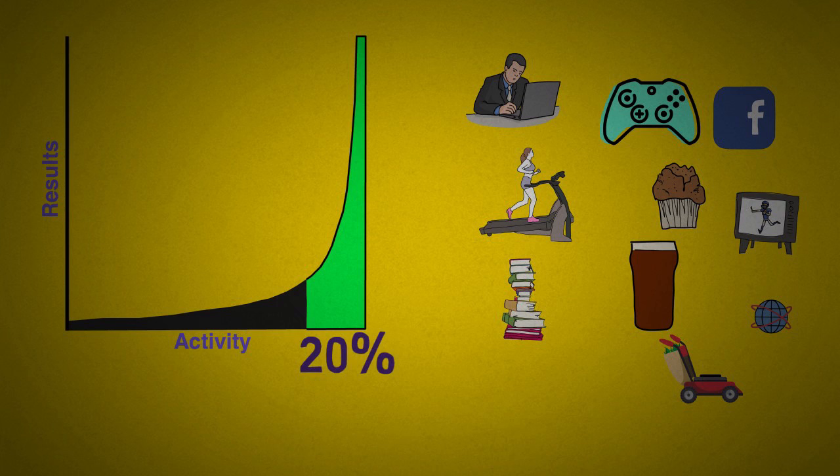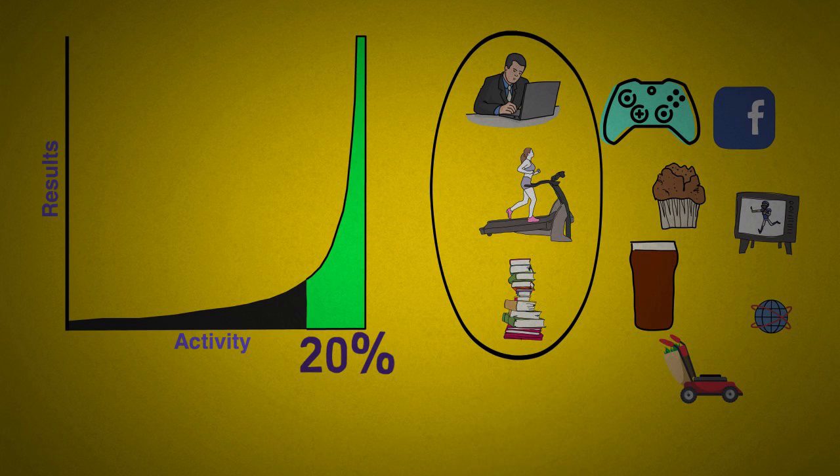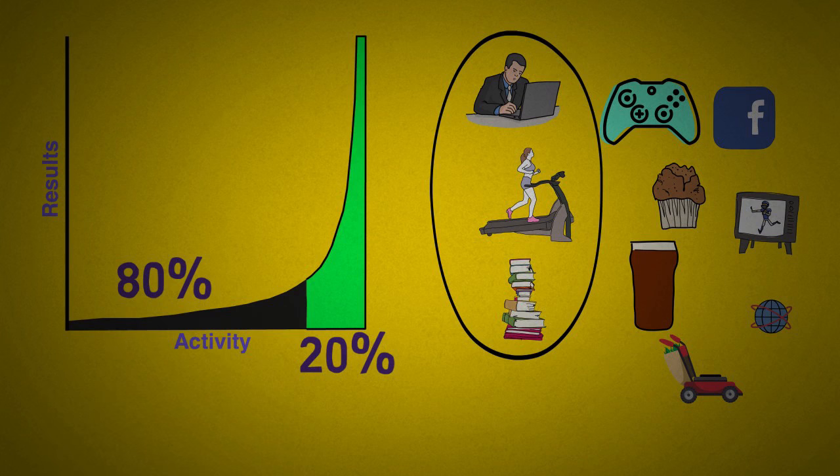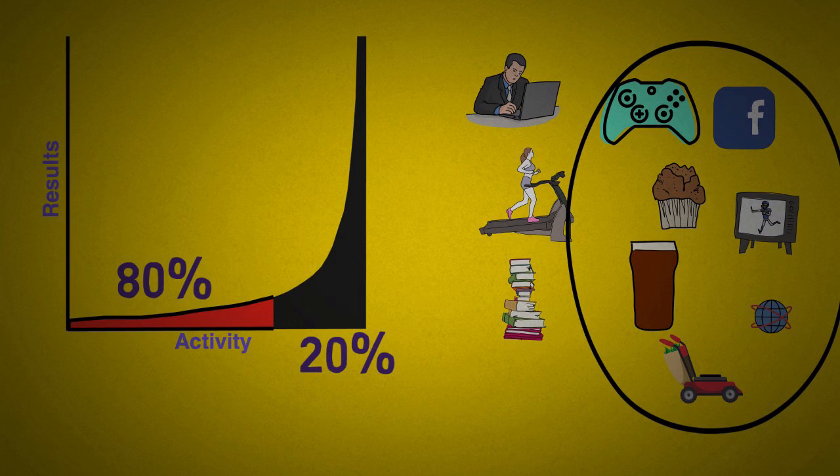The first step is to determine the 20% of activities that matter given all possible activities you already do. Then look at the other 80% and think about all the unproductive stuff you do. Because the first D is DELETE.